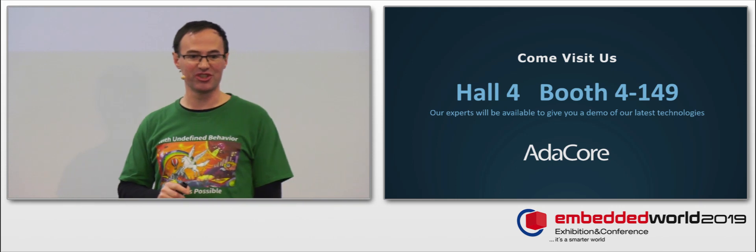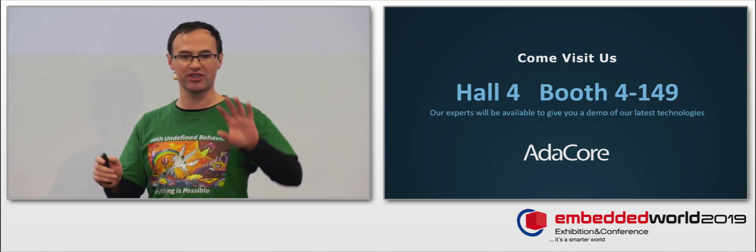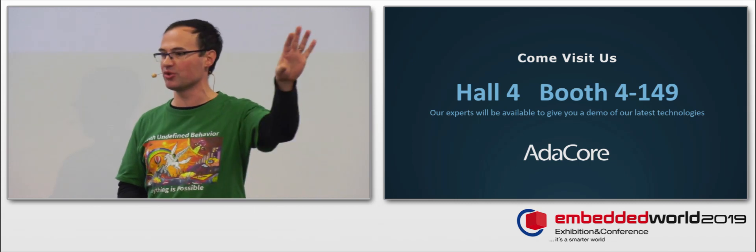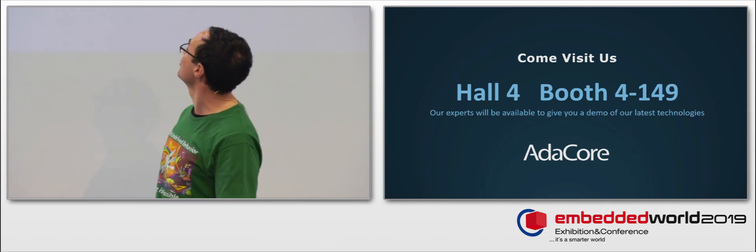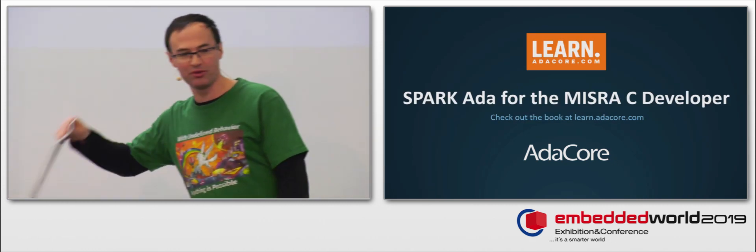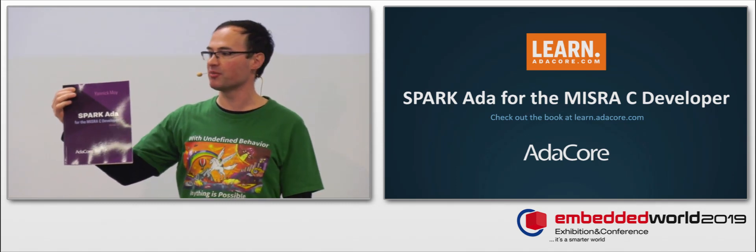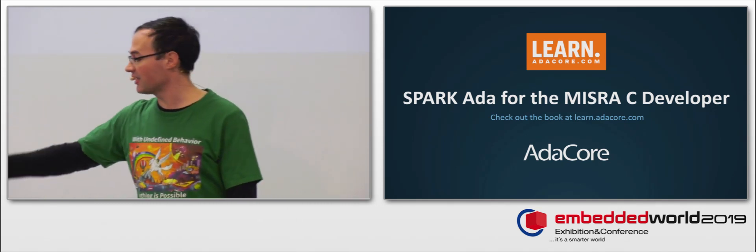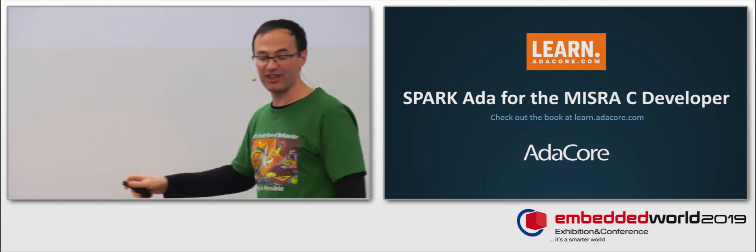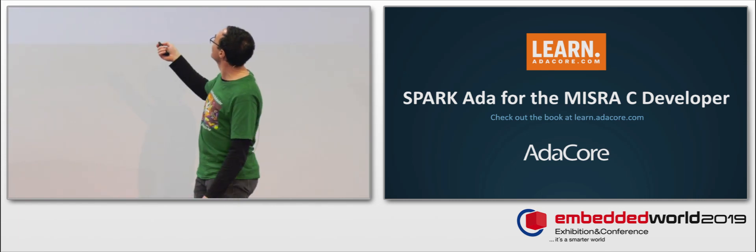So, that's all for this talk. If you want to talk to us, please come to our booth. We are just next to the big ARM booth close to the door in hall 4 booth 149. As I said, we have this book. I have a few copies that essentially go into more details about MISRA C and Spark. There's an online version with a very neat interactive feature, so you can compile and analyze directly from the browser that you can find at learn.adacore.com.